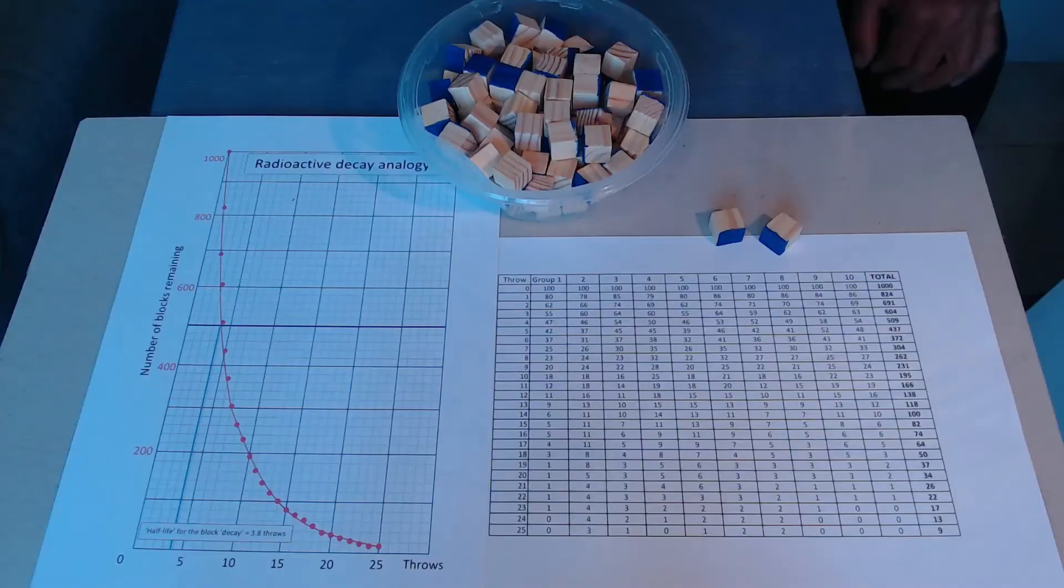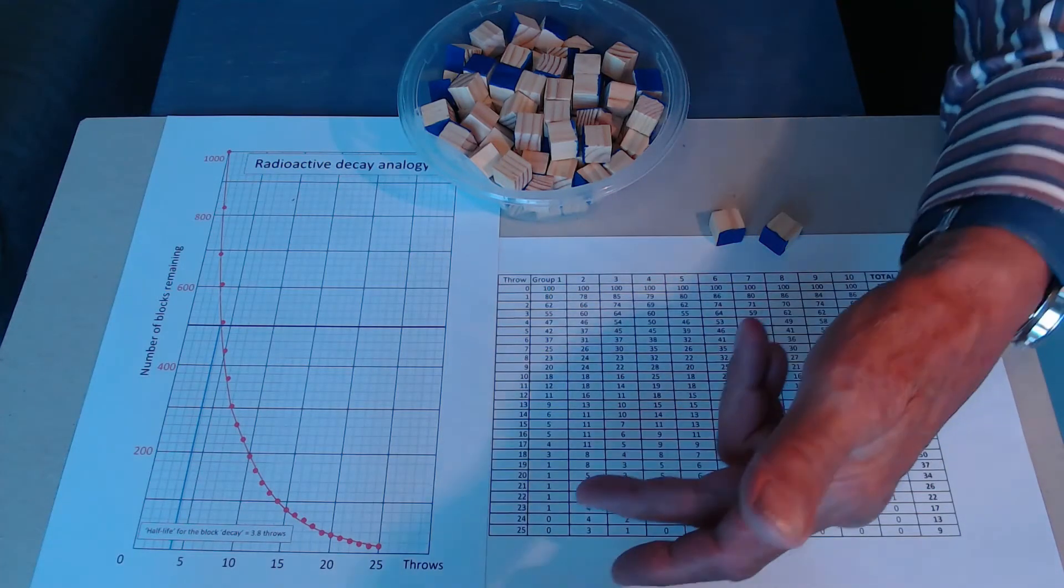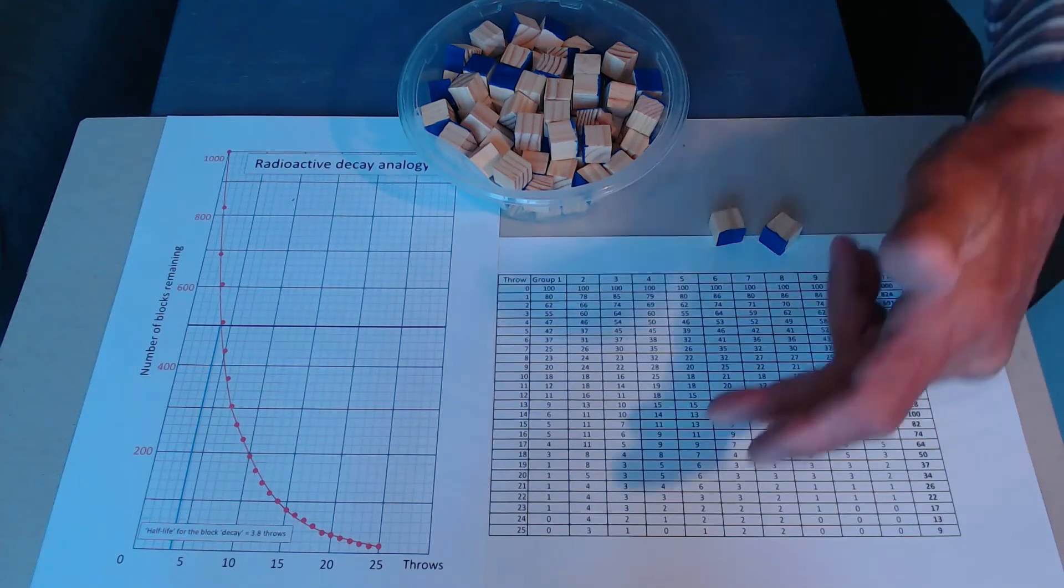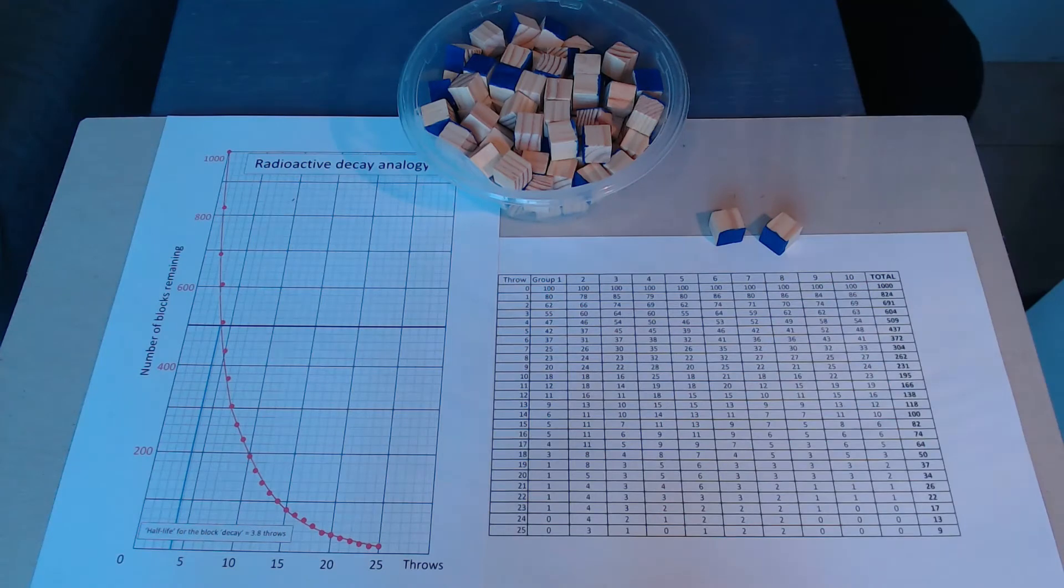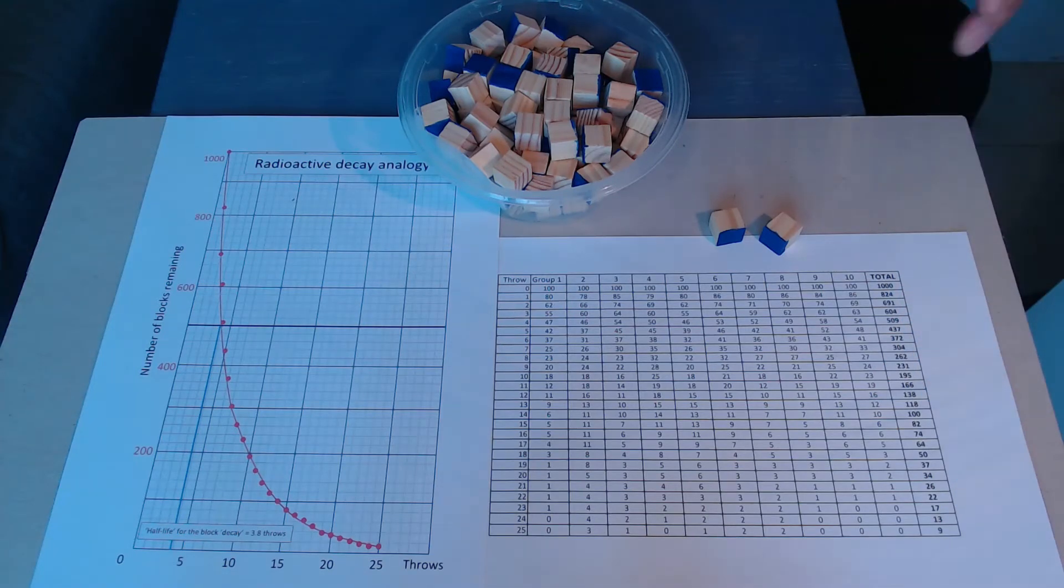I've done as promised. I've taken the rest of the readings, that means 10 complete sets, 25 throws for each one, which makes a total of 250 throws. You can see at the bottom here some of the 25 throws have reached zero, others have left three or one or two undecayed nuclei. On the right hand side is the average of the rows from a thousand at the top down to nine at the bottom.